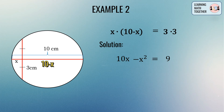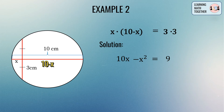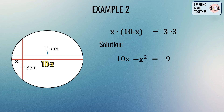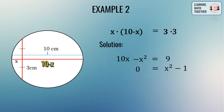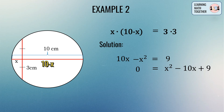Next, we transpose all terms from the left side to the right side of the equation to form a quadratic trinomial, which will make it easier to solve for x. Putting 0 on the left side and rearranging the terms on the right gives us x squared minus 10x plus 9.